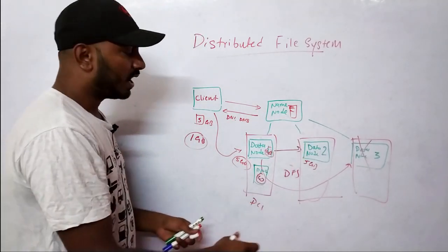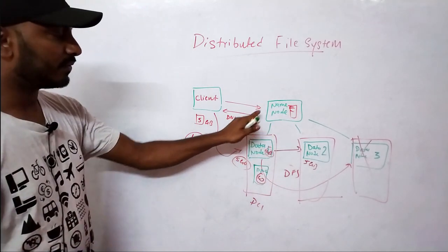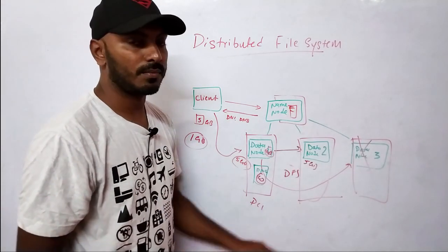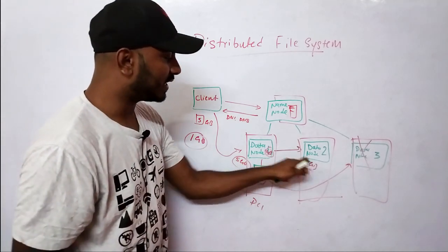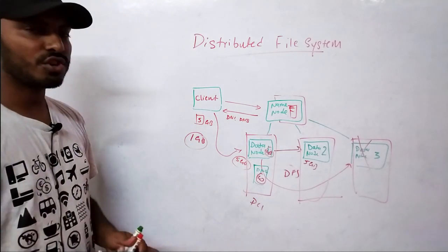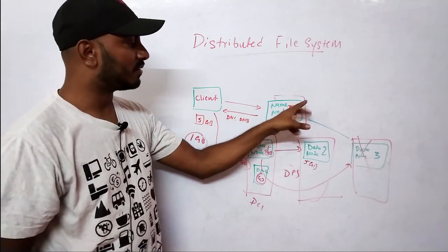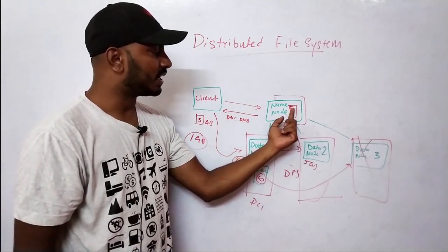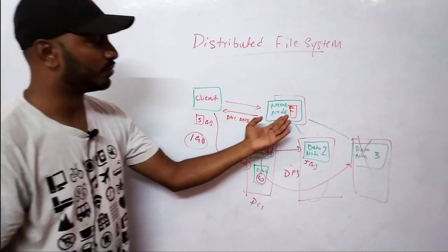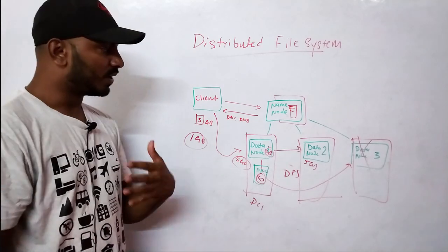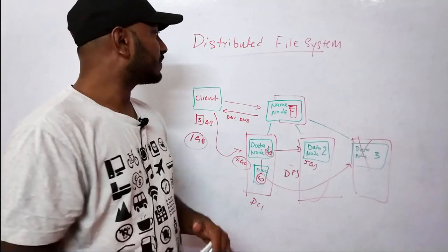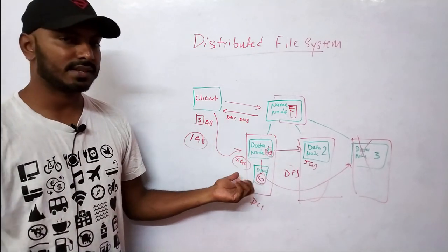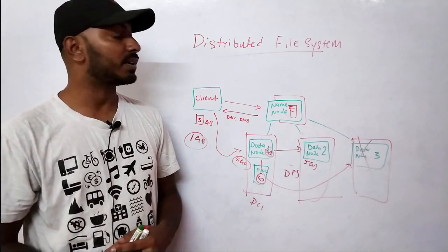You might think: isn't the Name Node itself a single point of failure? Yes — if there's only one Name Node and it goes down, no one knows where the files are. So there's always a backup Name Node with replicated metadata. In HDFS, I believe there's a master-standby setup where if the primary Name Node goes down, the standby takes over and metadata is always replicated between them. That covers the basic working of distributed file systems — when you need them, how data is saved, and how it's managed. Thanks for watching.